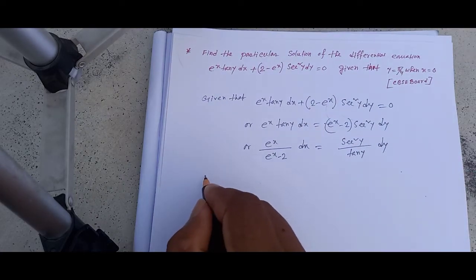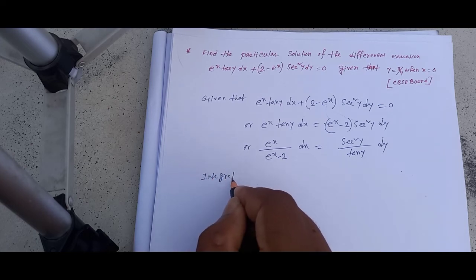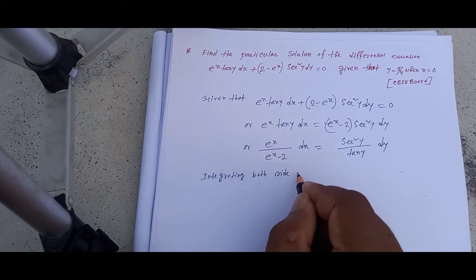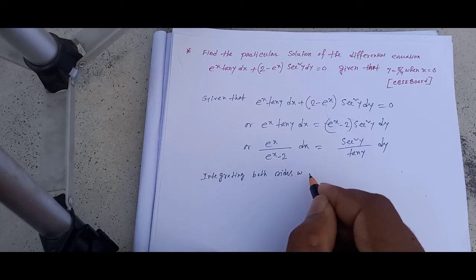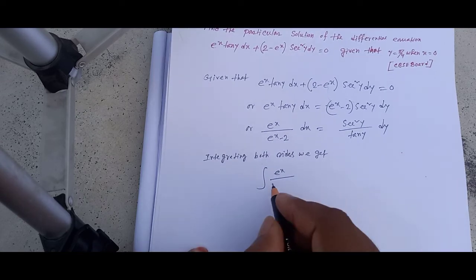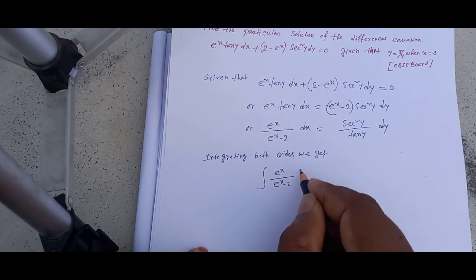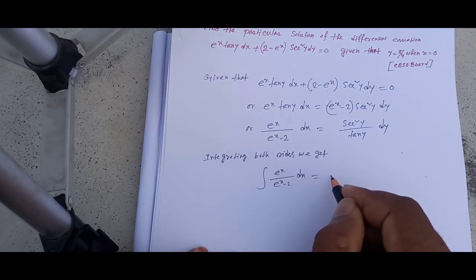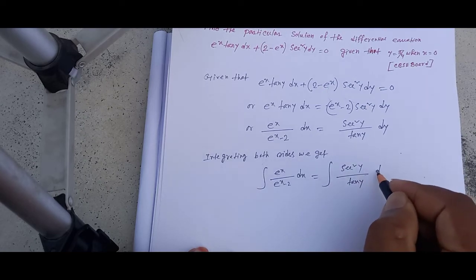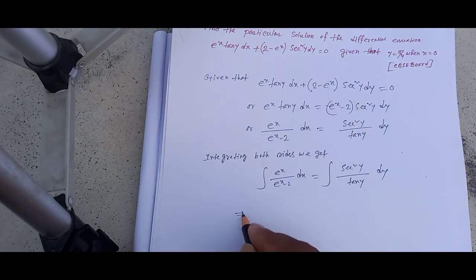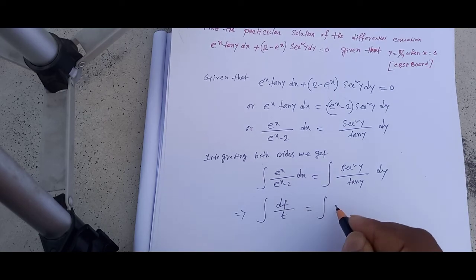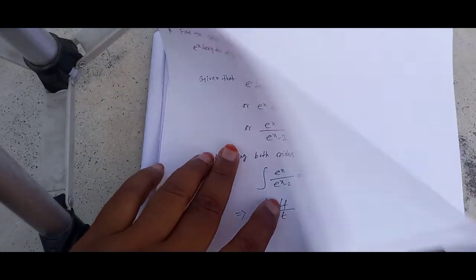Integrating both sides: integration of e to the power x divided by e to the power x minus 2 dx equals integration of sec square y divided by tan y dy. This can be written as integration of dt divided by t equals integration of ds divided by s.